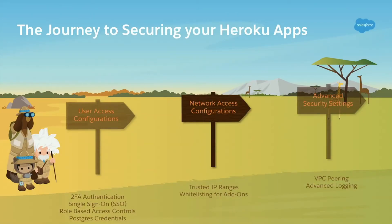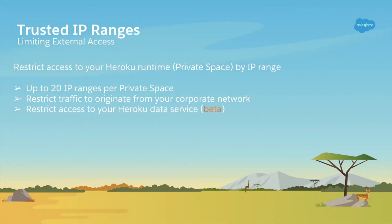Let's dive into network access configurations. You can trust IP address ranges for your Heroku private space. Say you want to only allow access from within your corporate network to an application running in your Heroku private space — you can do that by finding out the IP address range for that corporate network and setting it in the dashboard. It's in beta right now, but you can restrict access in the same way to your data service as well.